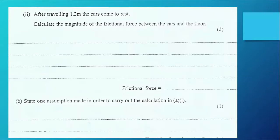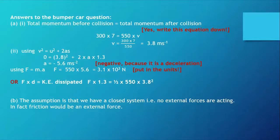That looks similar to some of the other questions we've had before, but then we're asked: after traveling 1.3 meters the cars come to rest, calculate the magnitude of the frictional force between the cars and the floor. This could be a little bit trickier. Part b asks us to state one assumption. Could that relate to the law of conservation of momentum and the proviso that we talked about earlier? Yes, I think it certainly could. You might like to pause for a moment and look at this question and see if you can come up with your own answers.